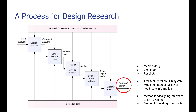Design research can produce different kinds of artifacts. It can be physical artifacts such as medical drugs, ventilators, or respirators. It could also produce models such as an architecture for an electronic health record system or a model for interoperability of information. Or it could produce different methods, for example for designing interfaces or methods for treating various diseases.